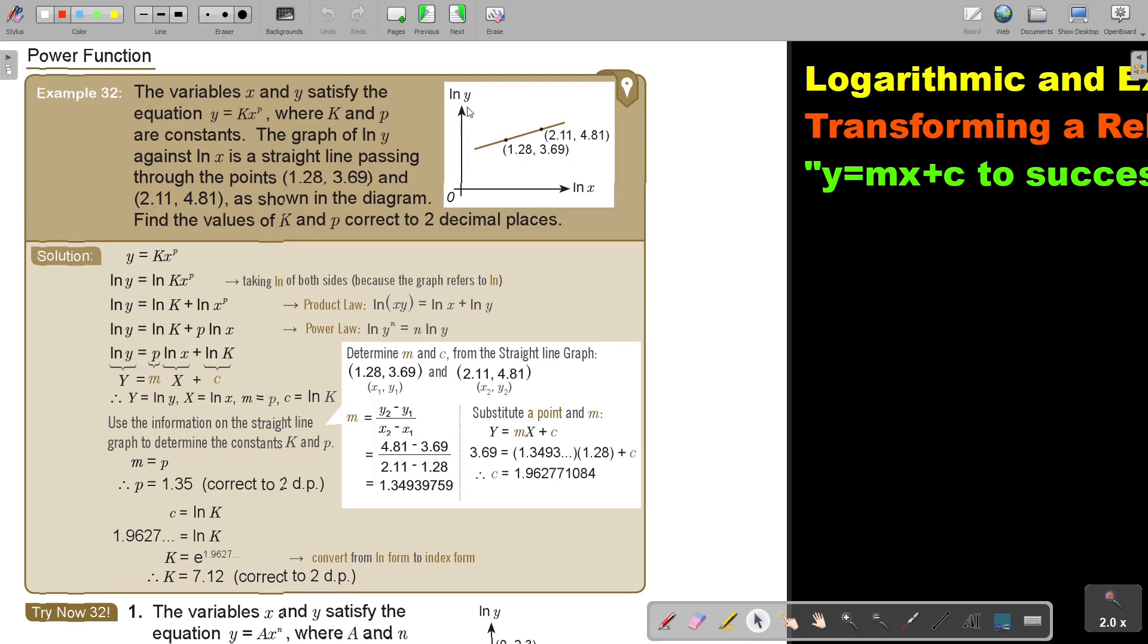Now remember what I said. As soon as you see somewhere a ln, you just work with ln and not with log, with a base of e. So basically, I'm taking and I put ln on both sides. And then, I'm going to use my law. So, this is going to be plus. Then I bring this one down. So, it's going to be p ln x.